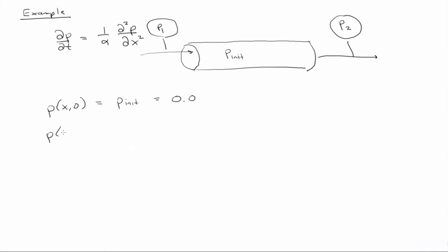And then we'll assume that p at zero for all time is equal to p1, and we'll assume that that's a thousand psi for our model problem. For example, and p at L for all time is equal to p2, and that's equal to zero.